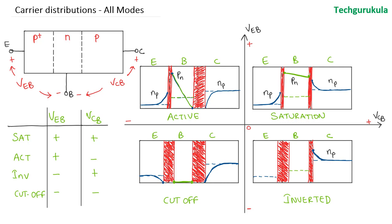There would be injection of holes from collector to base. Hence there would be carrier concentration here, and it would reduce to zero near the emitter junction depletion region — the carrier concentration would be like this. And as the emitter junction is reverse biased, on the emitter side the electron concentration would be like this, because the carrier concentration should be zero near the depletion region.